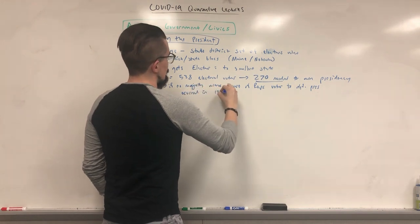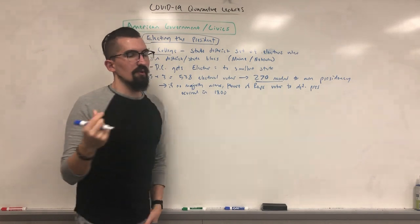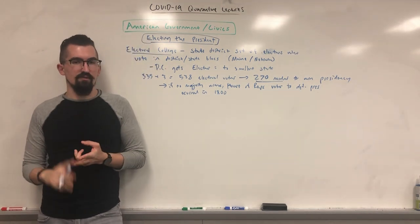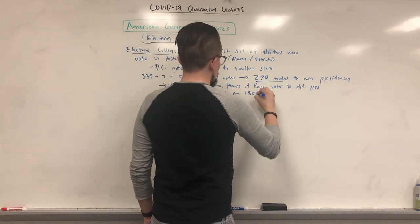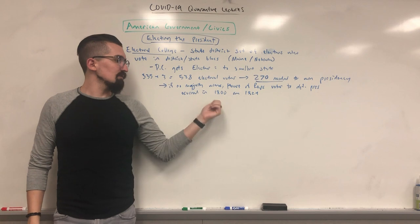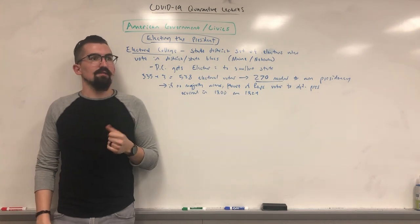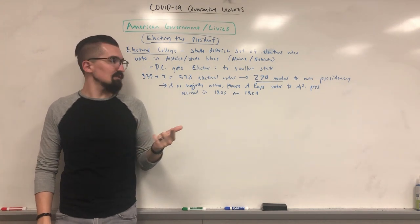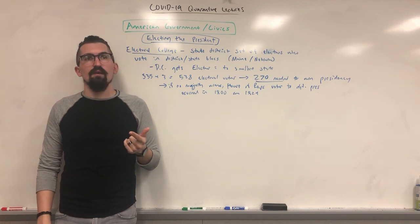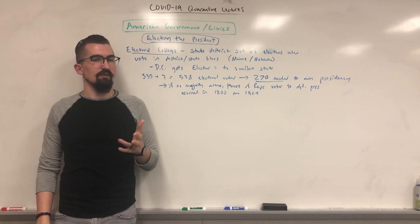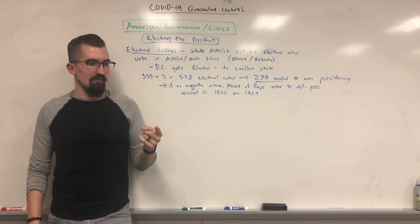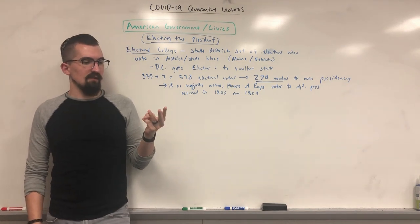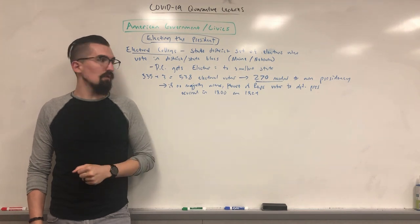This happened in 1800, where the two primary candidates were Thomas Jefferson and John Adams. It also happened in 1824 with a four-way split — Andrew Jackson, John Quincy Adams, Henry Clay, and William Crawford. They reduced it to three for the House vote by removing Clay, and it came down to Crawford, John Quincy Adams, and Andrew Jackson. John Quincy Adams won.